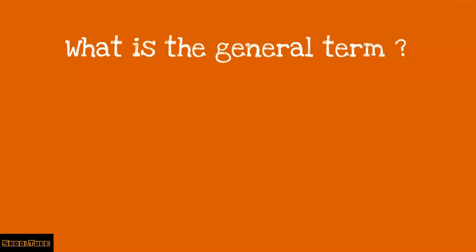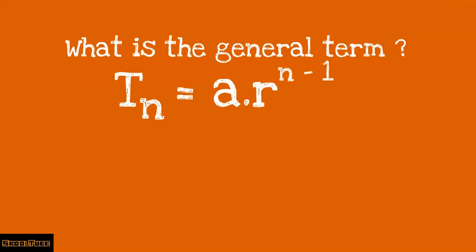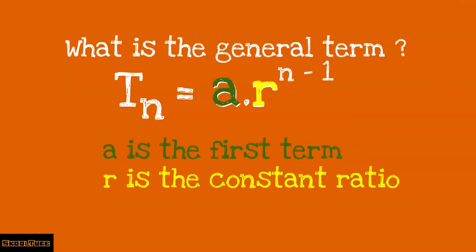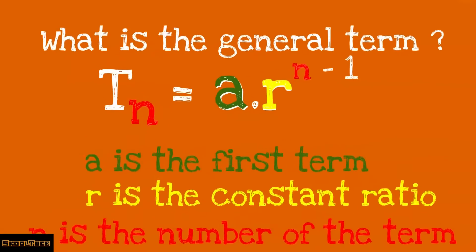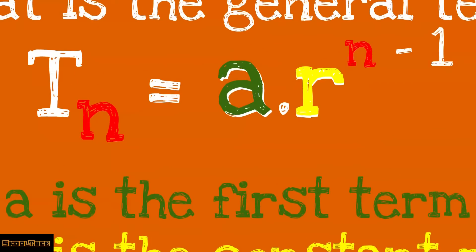What is the general term? The general term is Tn equals a multiplied by r exponent n minus 1, where a is the first term, r is the constant ratio, and n is the number of the term.